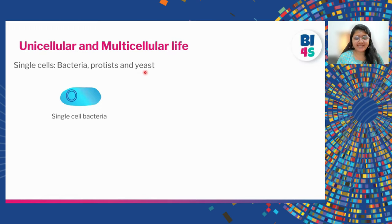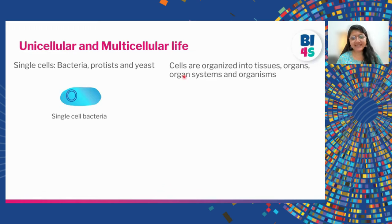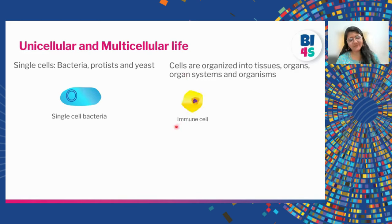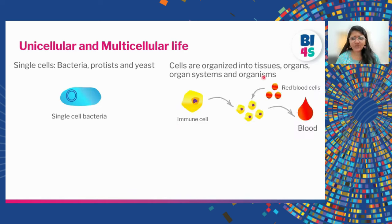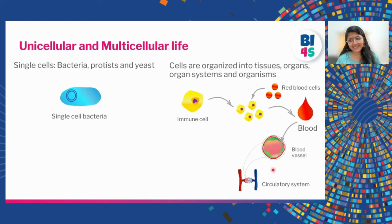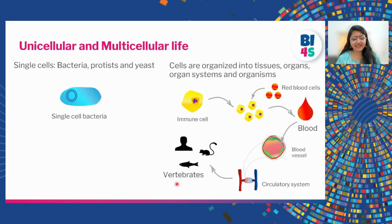Cells can also be unicellular or multicellular. For example, bacteria, protozoa, and yeast remain as single cells with their genetic material. In the case of multicellular life, cells start organizing into different levels — first making tissues, then organs, then organ systems, and collectively they make an organism. For example, immune cells fight germs; red blood cells carry oxygen. When these cell types come together they form blood, which flows through blood vessels — arteries or veins — forming the circulatory system. Different organ systems combined form an organism, such as vertebrates: fishes, mice, humans, or monkeys.